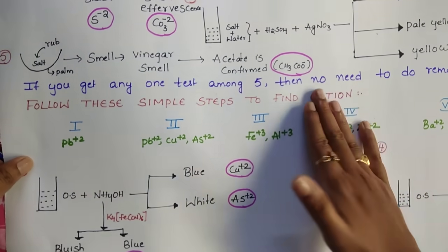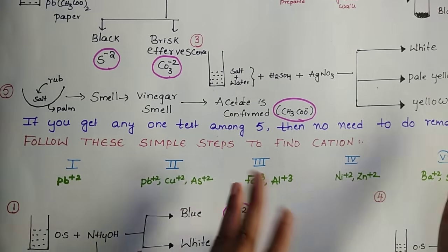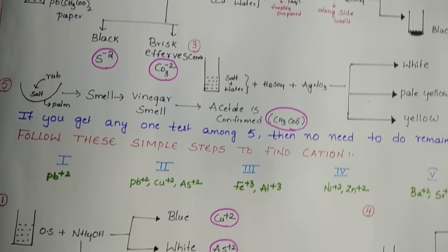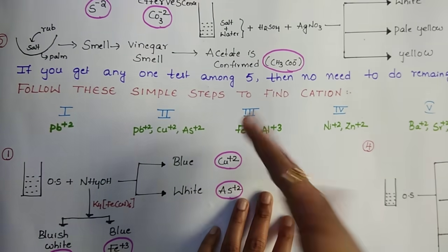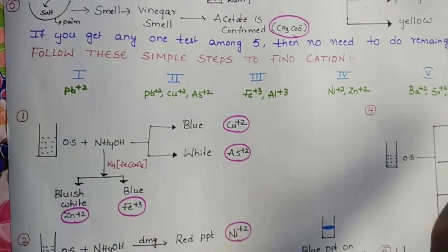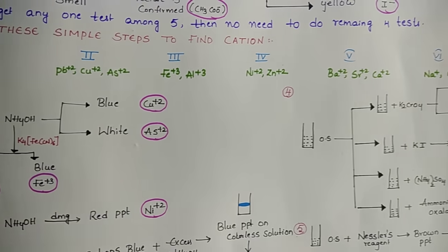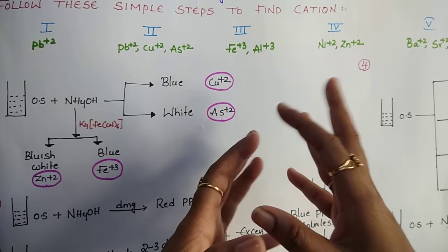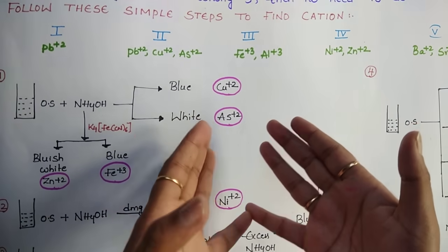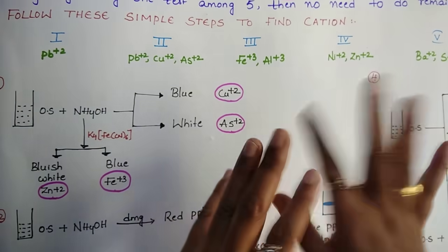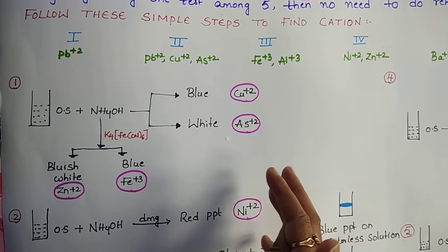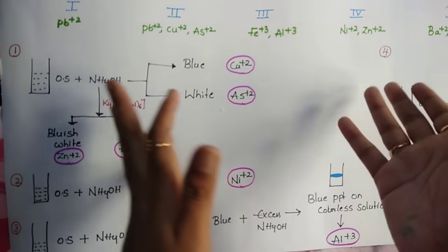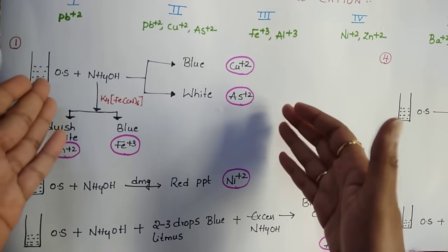This is useful for both PUC and CBSE students, and for both class 11 and class 12 students. In any of these five tests if you find an anion, you don't need to continue the remaining tests. Now let us see how to identify the cation. We have six groups of cations. First, prepare the original salt solution: take a little salt, add water — if it dissolves, that is your original solution. If not, heat it; if still not, add dilute HCl. Either cold or hot water or dilute HCl will dissolve your salt.